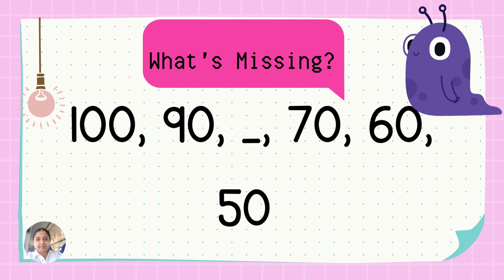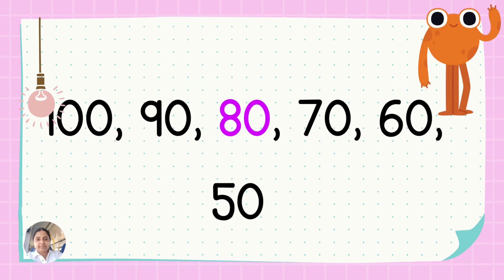Here comes the last challenge. In this case, we are doing backwards skipping by ten. You have to tell me what is the number missing in the sequence. The number starts with the number hundred and then we count backwards by tens. Keep trying! The missing number is number eighty. You are doing a great job solving all those maths problems. Well done!